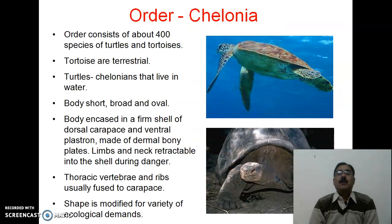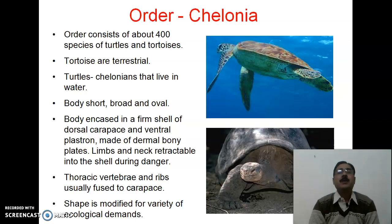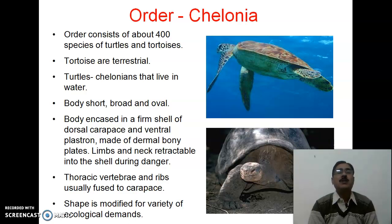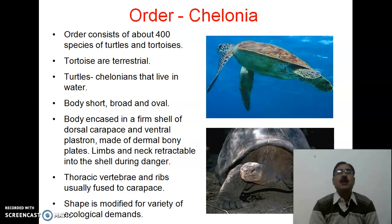Regarding the first living order of reptiles, that is Order Chelonia: approximately 400 species of turtles and tortoises are included. Tortoises are terrestrial, while turtles and chelonians live in the waters.